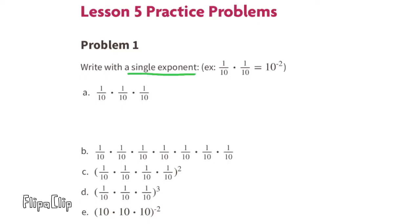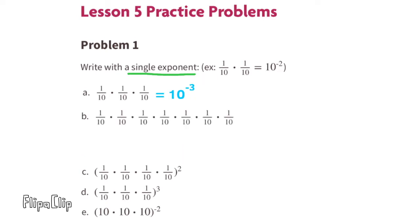Write with a single exponent. Part A: 1/10 times 1/10 times 1/10, written with a single exponent, is equivalent to 10 to the power of negative 3.